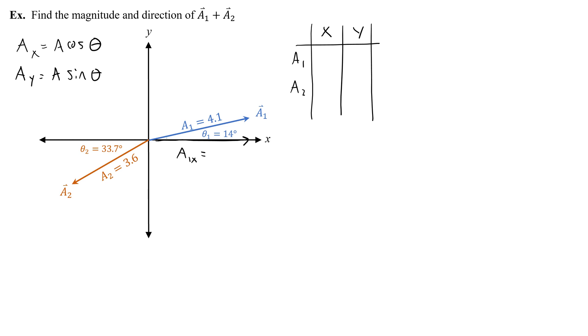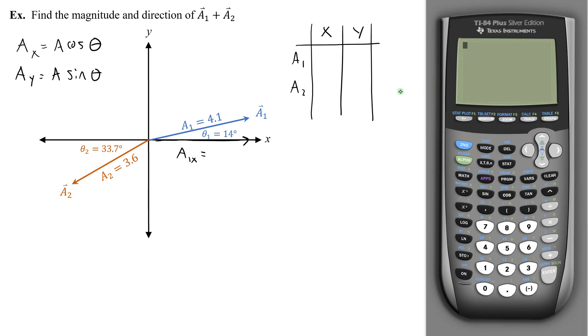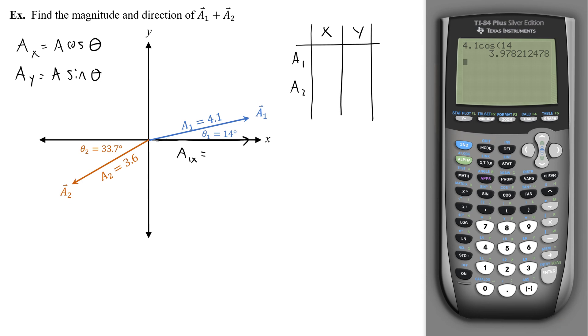I'll just do this with my calculator. So for a1, my a is 4.1, and my angle is 14, so the x component will be 4.1 cosine of 14. That gives me 3.978, we're going to round that to 4. And I'll write that in my chart: 4. Let's just keep track of all this in our chart.